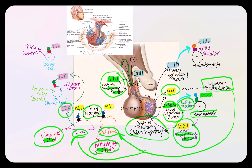Practically every cell in the body will have the receptor for IGF, allowing cellular growth, tissue growth, organ growth, and eventually growth of the individual. IGF will increase overall cellular growth, amino acid uptake, and glucose uptake. This will reduce blood amino acid and glucose concentrations, while promoting tissue and organ growth throughout the body.